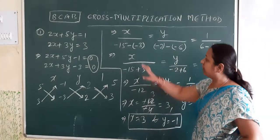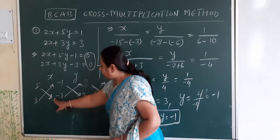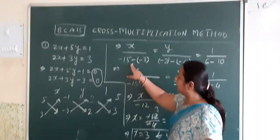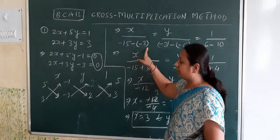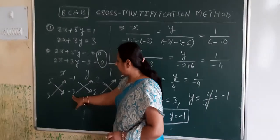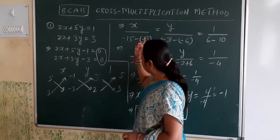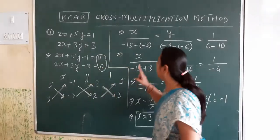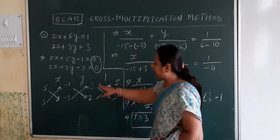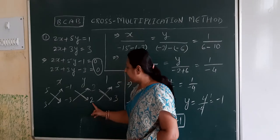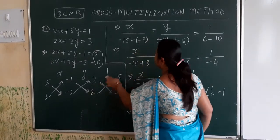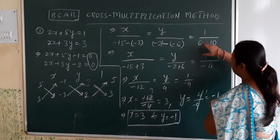Now we come to x. For the cross multiplication, multiply 5 by minus 3, which equals minus 15. Put a minus sign between the two cross-multiplied terms: minus 15. Then multiply 3 by minus 1, which equals minus 3. Put the equal sign. Then for y: 5 into 2 equals minus 2, put minus sign, then minus 3 into 2 equals minus 6. Put equal sign.